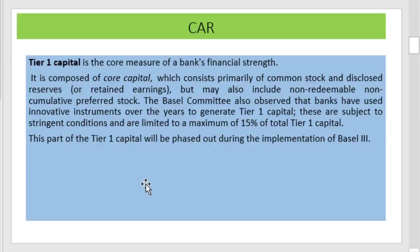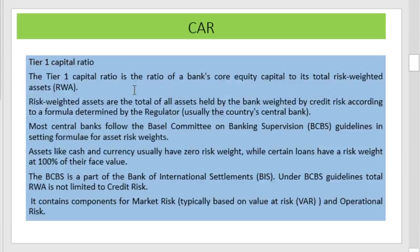This part of Tier 1 capital will be phased out during the implementation of Basel 3. Tier 1 capital is the ratio of the bank's core equity capital to its total risk-weighted assets. Risk-weighted assets are the total of all assets held by the bank weighted by credit risk, according to a formula determined by the regulator, usually the country's central bank. Most central banks follow the Basel Committee on Banking Supervision guidelines in setting the formula for asset risk-weighting.